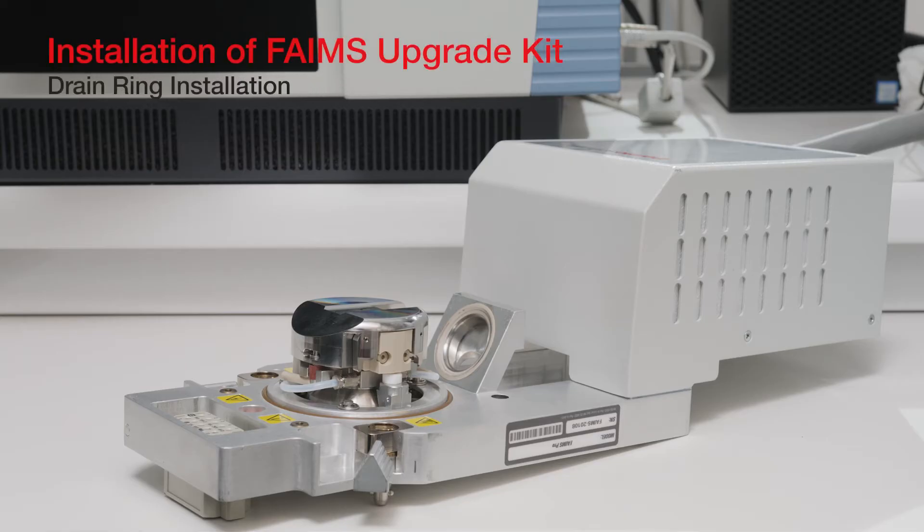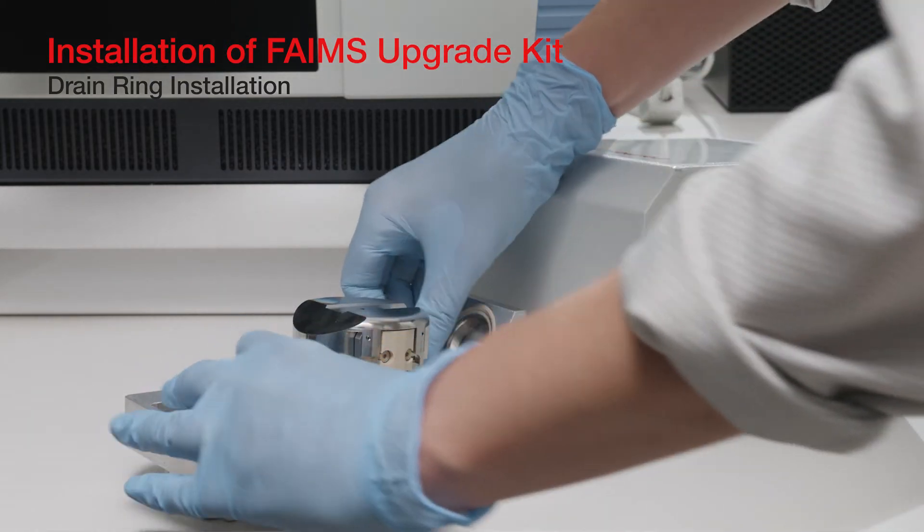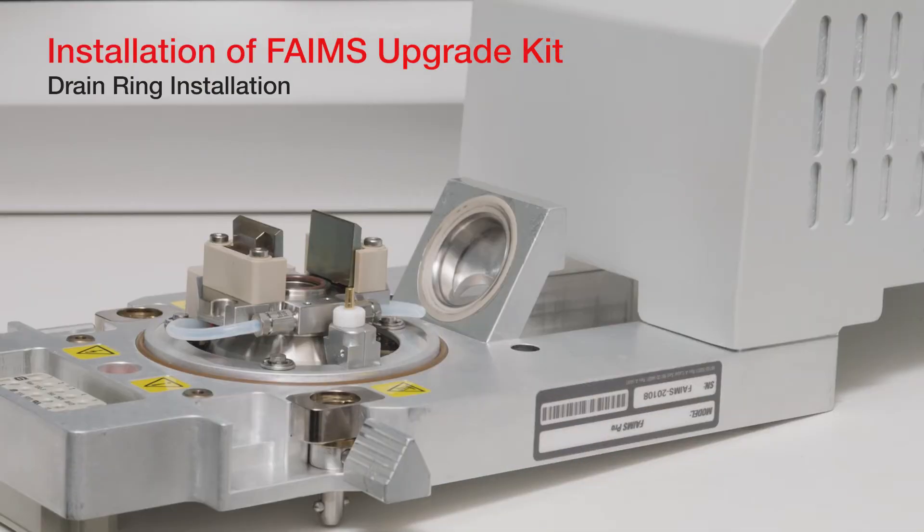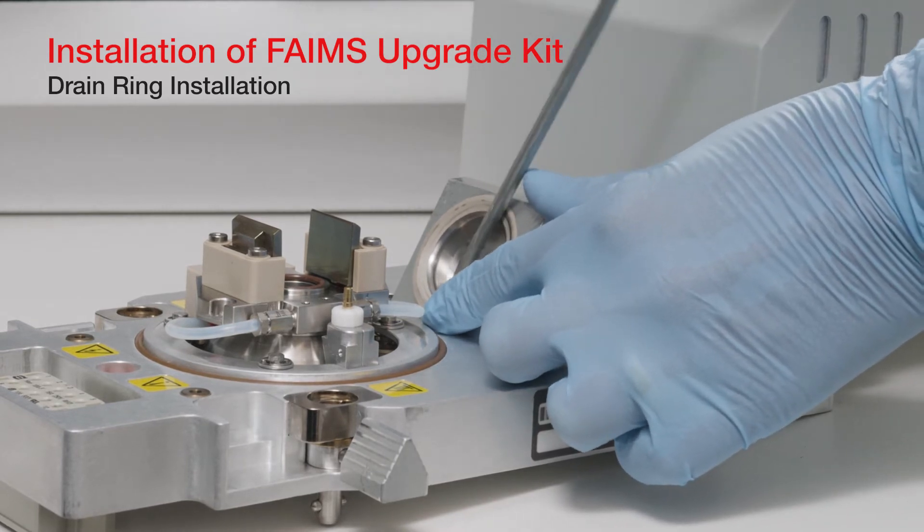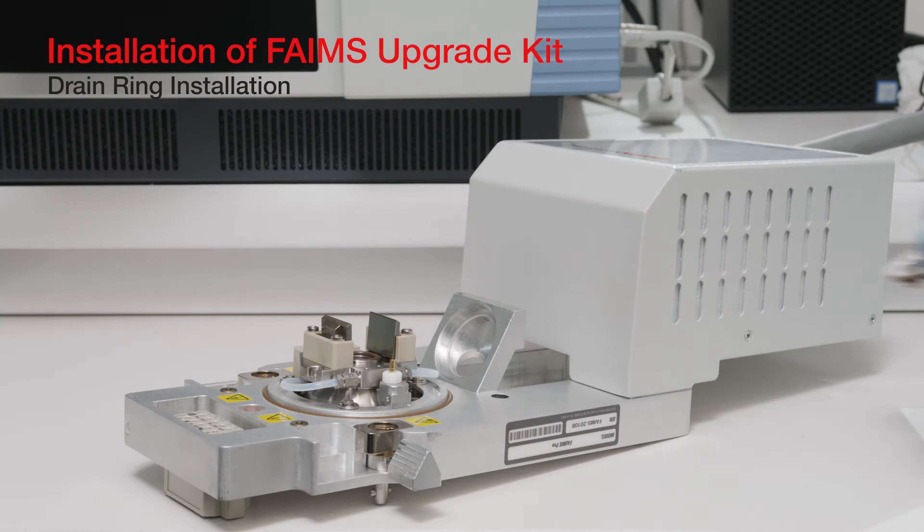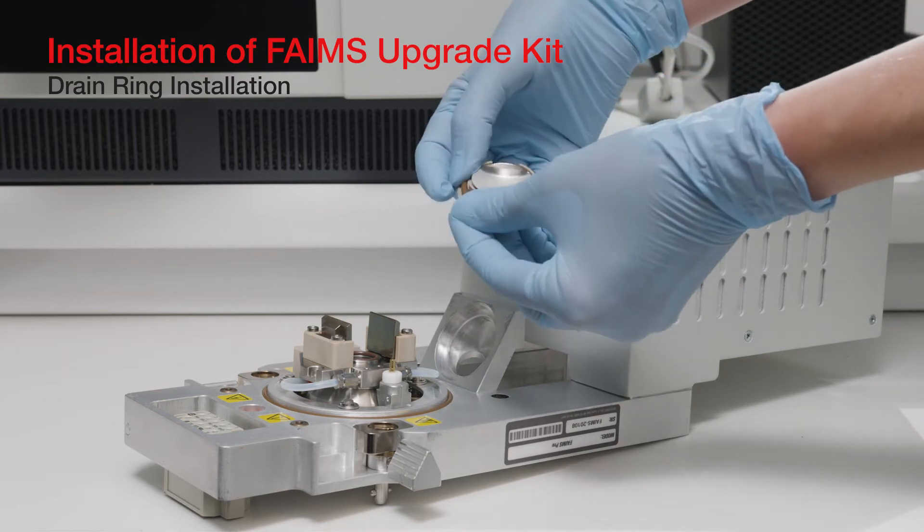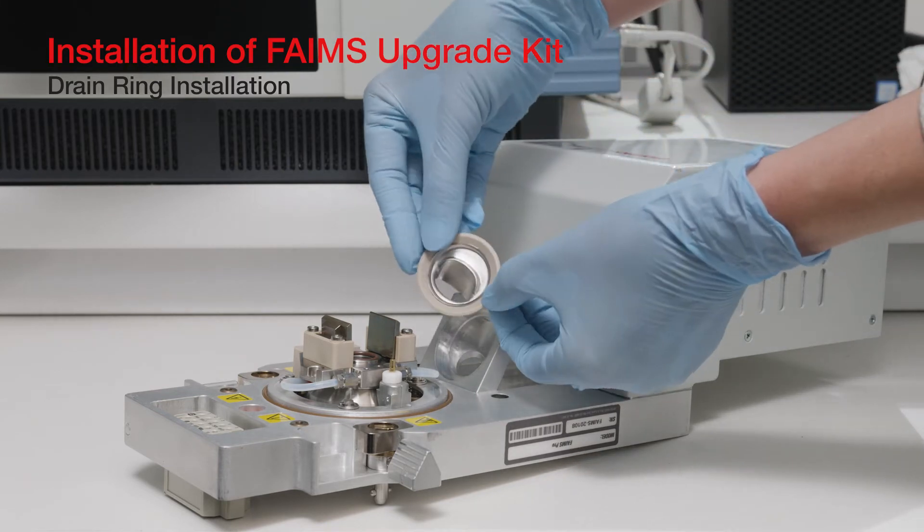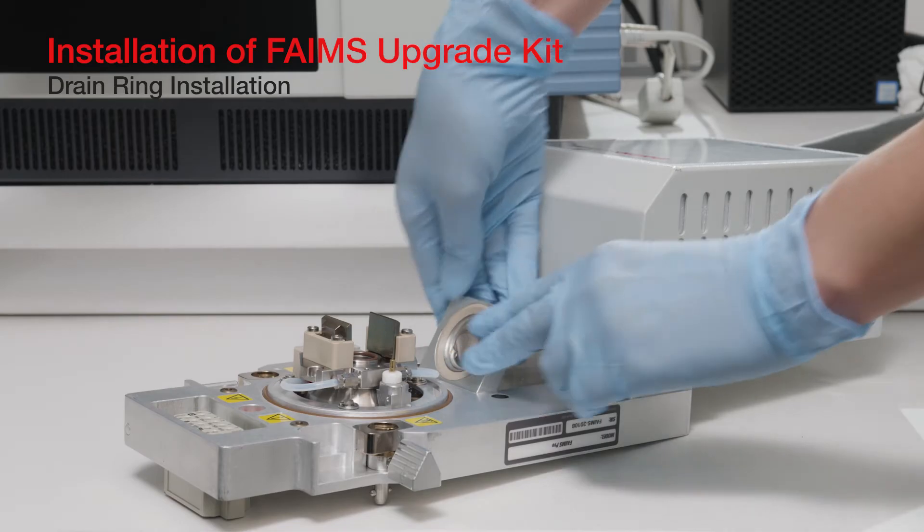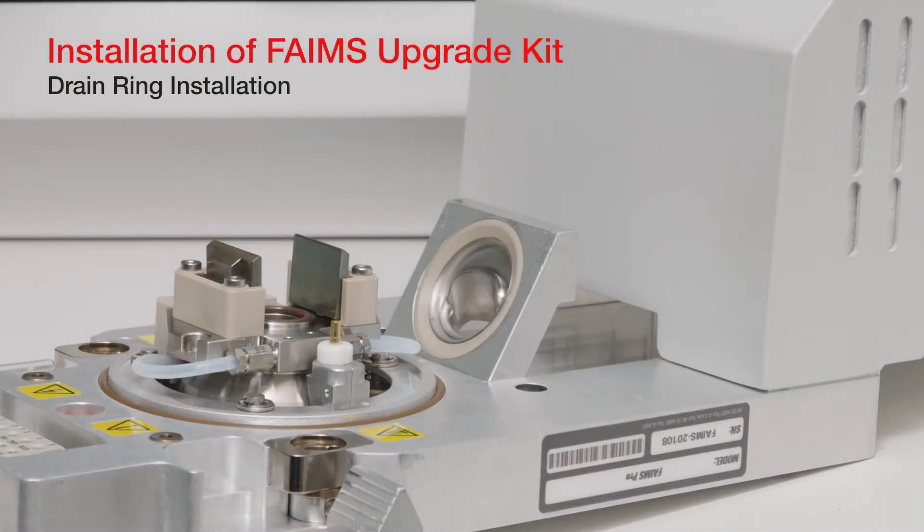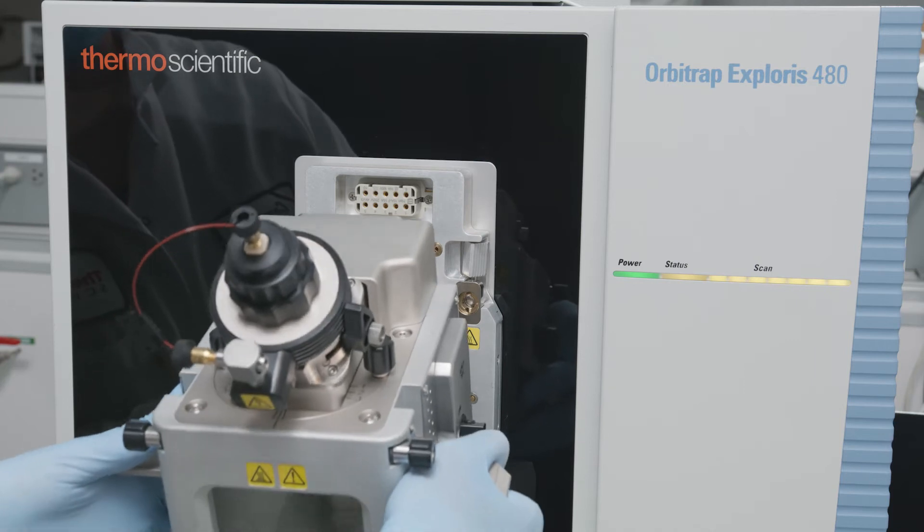Remove the FAIMS Pro from the MS and place the housing adapter module on a flat surface with the electrode assembly facing up. Remove the electrode assembly from the FAIMS Pro to gain easier access to the drain ring. Insert the small flathead screwdriver between the drain ring and the housing adapter, and gently pry the drain ring from the housing adapter. Then place the O-ring on the bottom of the FAIMS Pro Duo drain ring. Align the FAIMS Pro Duo drain ring with the housing adapter such that the bottom side of the O-ring faces down towards the RF box. Push the drain ring in place until it sits flush with the housing adapter. After reassembling the FAIMS Pro and reinstalling the sprayer,